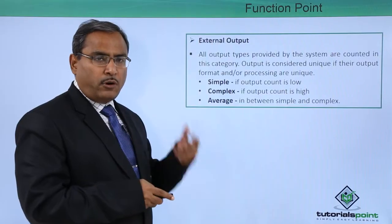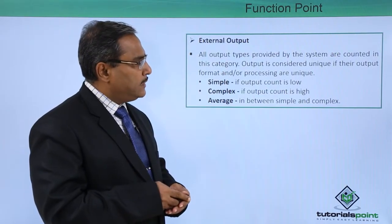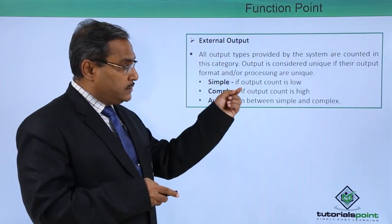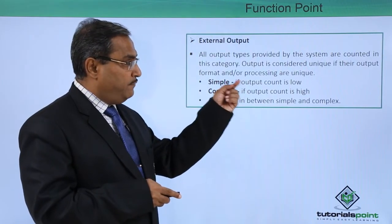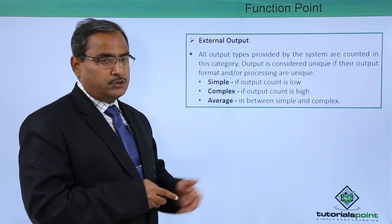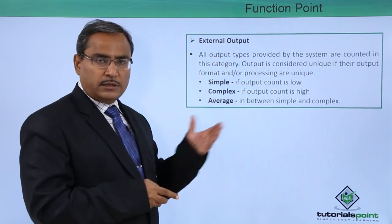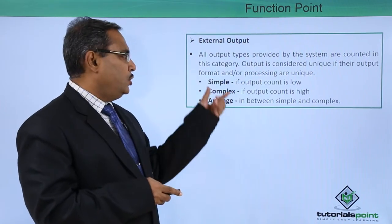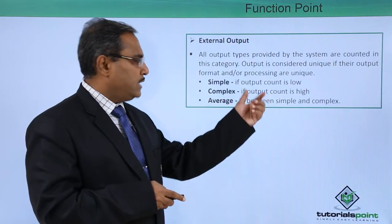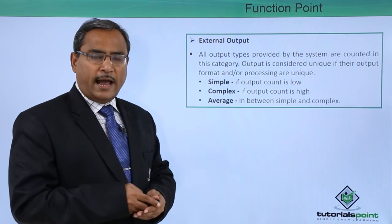Next is external output. All output types provided by the system are counted in this category. An output is considered unique if its output format and/or processing are unique. Simple means if the output count is low, complex means if the output count is high, and average means in between simple and complex.